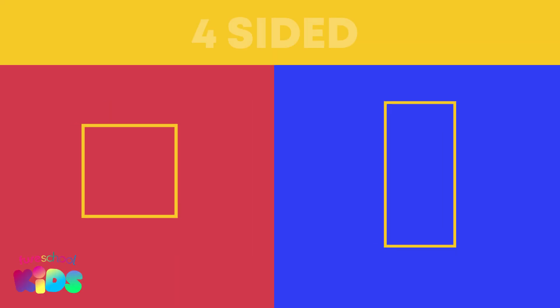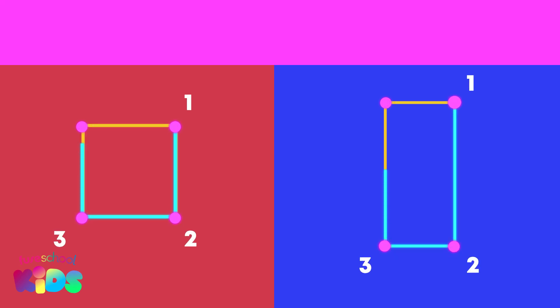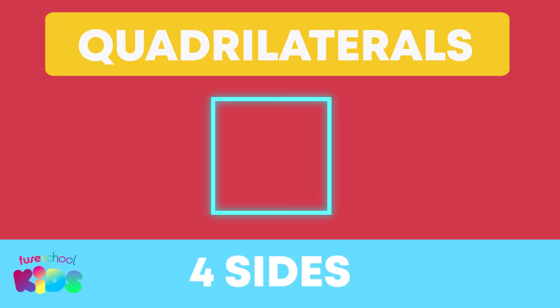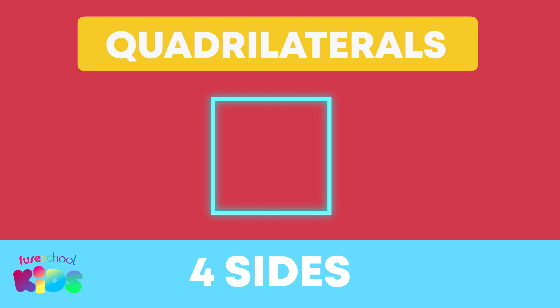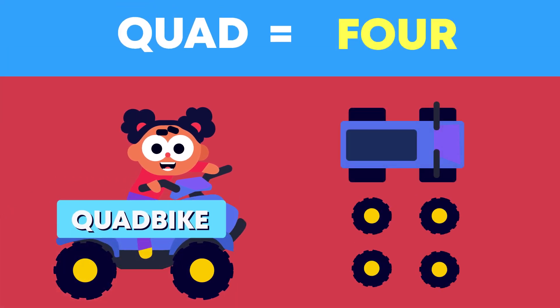Shapes like squares and rectangles are 4-sided. They have 1, 2, 3, 4 sides and 1, 2, 3, 4 vertices. We call polygons with 4 sides quadrilaterals. Just like we call a 4-wheeler a quad bike — quad means 4.